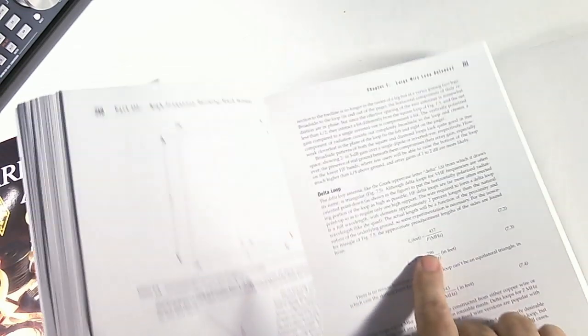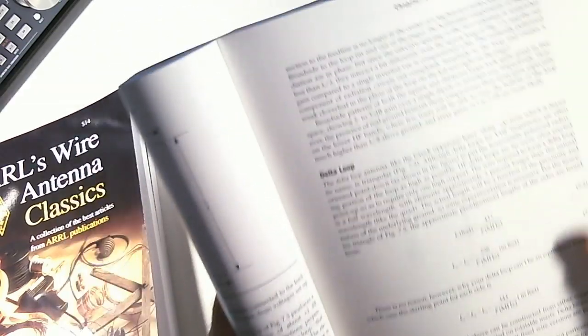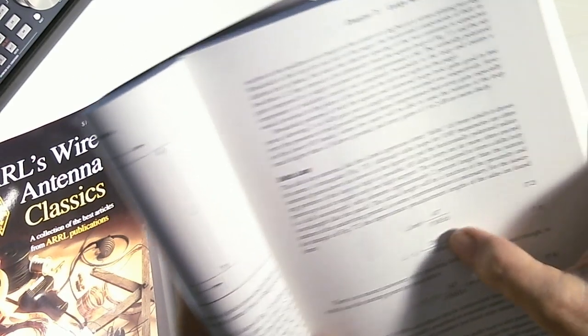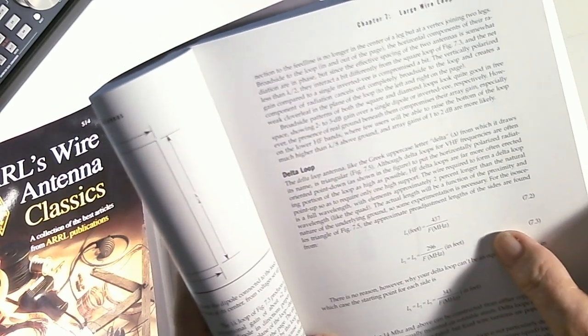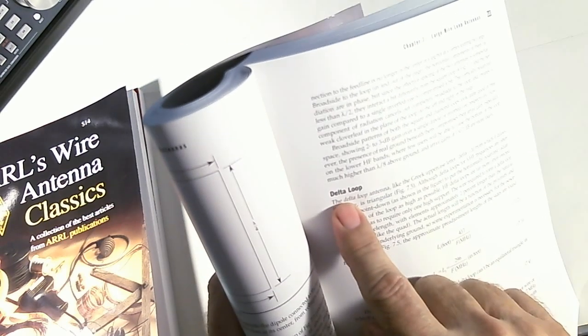Here's for instance a formula. That's not showing up too well, my lighting is just not too well, but anyway, believe me, trust me, right here is a formula of how you determine the length in feet of a delta loop.